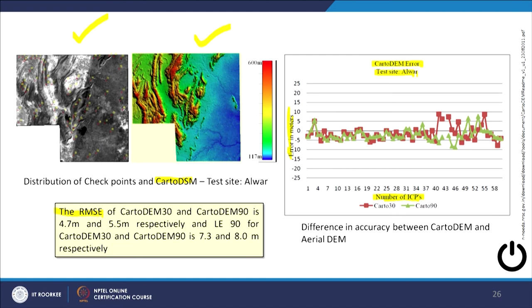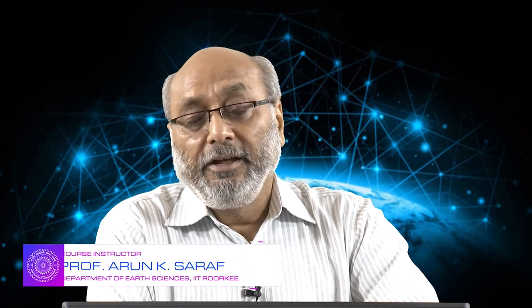To conclude: we must differentiate between inherent errors and errors generated through our own processing. We may not have much control over inherent errors, but knowledge of them is essential because the reliability and confidence level of results depend on them. Processing errors are in our hands — at every stage we can keep checking, and if errors are found, correct them immediately before moving forward. Thank you very much.